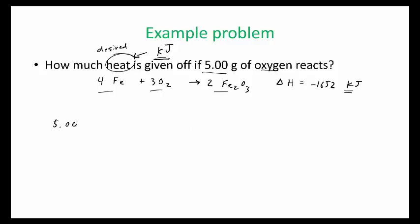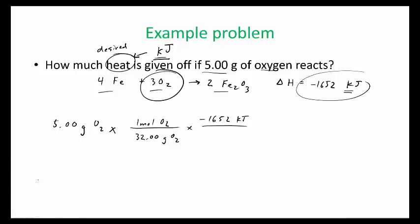So we have to use some unit analysis to solve this problem. Okay, so we're going to change this to moles first. So in one mole of O2, there are 32.00 grams of O2. And 1,652 kilojoules over, so this is how much heat is produced per three moles. So this is the stoichiometric equivalent here. So I'm going to use that as my conversion factor.